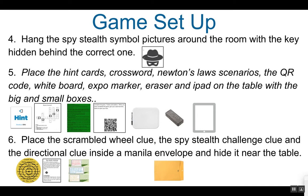Hang the spy stealth symbol pictures around the room with the key hidden behind the correct one. There are spy stealth challenge pages which give the symbol. If you're using more than one group with more than one box going at the same time, there are multiple challenge pages and multiple symbols to hang around the room. Next, place the hint cards, the crossword puzzle, the Newton's laws scenarios, the QR code for the snakes and ladders game, the whiteboard, expo marker, eraser, and iPad on the table with the big and small boxes.